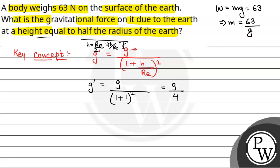So h by R_e equals 1 by 2. This gives us (1 plus 1 by 2) whole squared in the denominator, which is (3/2)² = 9 by 4. So g' will be equal to g divided by 9 by 4, which equals 4g by 9.